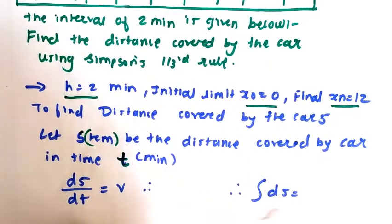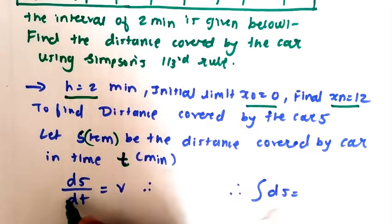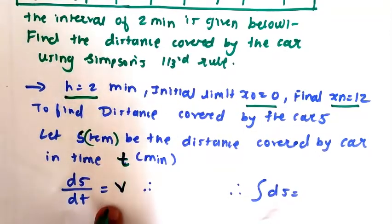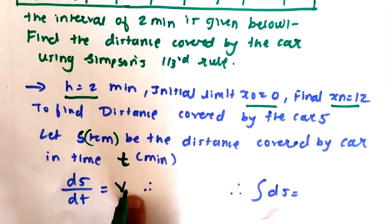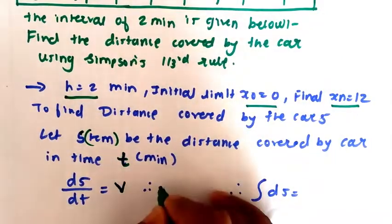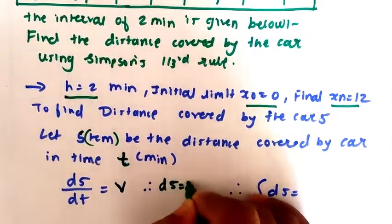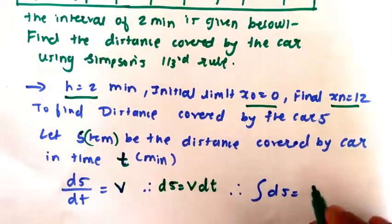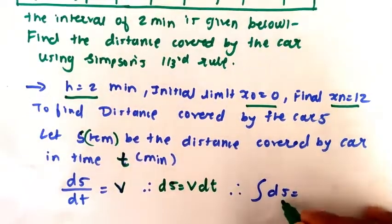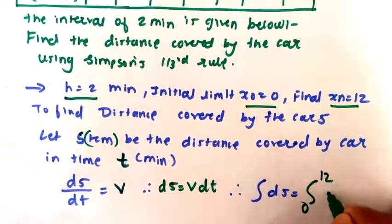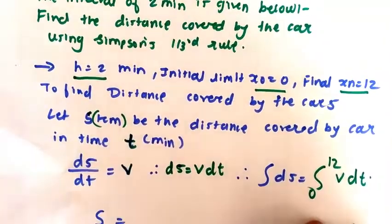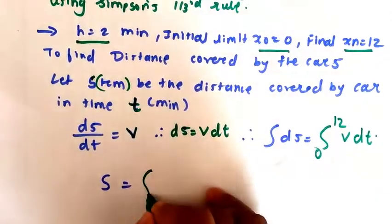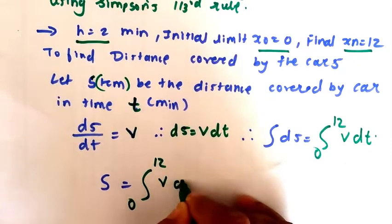Now it will be in this manner: ds/dt which is equal to v. ds/dt, distance covered by time, which is equal to velocity. It will be written in this form, so ds equals v dt. Also further simplifying, we will take the integration, so it will be integration from 0 to 12 v dt. Further simplifying we will get s equals integral from 0 to 12 v dt.